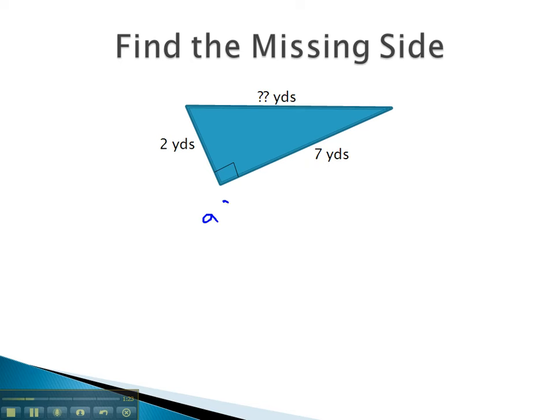Looking for the missing side of a triangle, we remember the Pythagorean Theorem says a squared plus b squared equals c squared, and the important side, side c, must be the hypotenuse, must be the side that's across from the right angle.